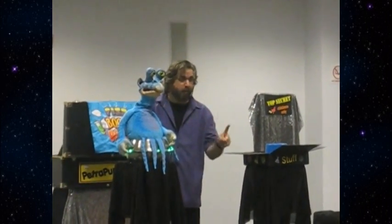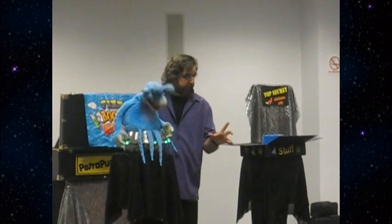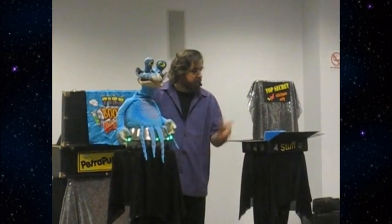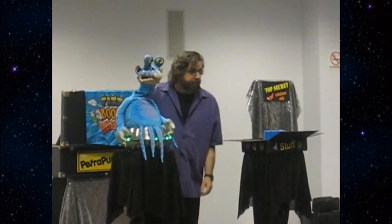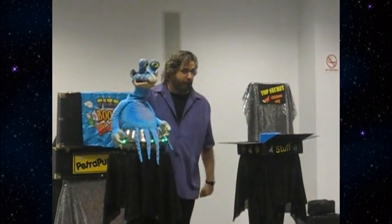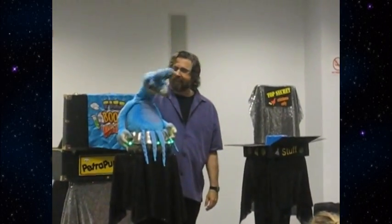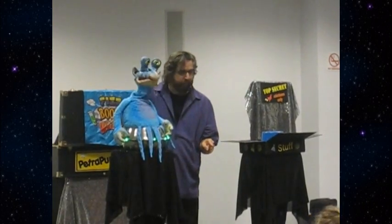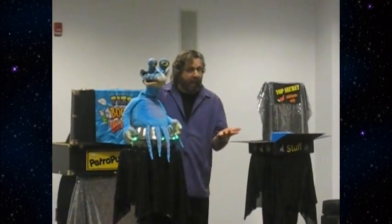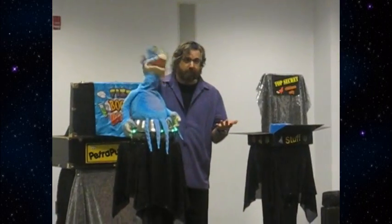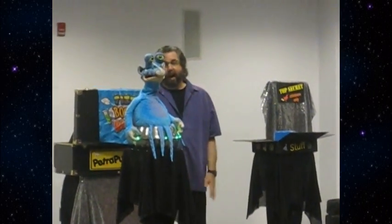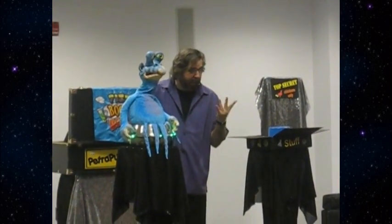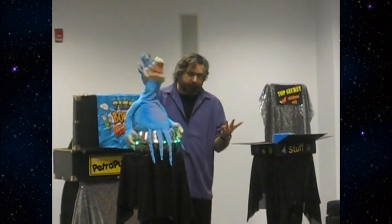All right, wait a minute. So the first letter of the outer space alphabet is B, and the second letter is E. What's the third letter of the outer space alphabet? Coo-coo. So the first letter is B, the second letter is E, and the third letter is Coo-coo. What is the fourth letter of the outer space alphabet? Coo-coo.